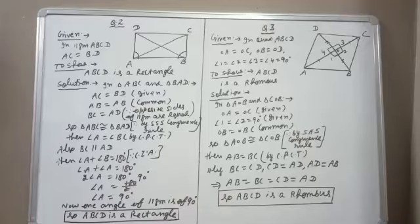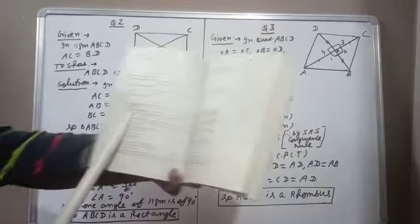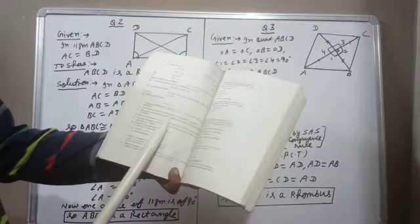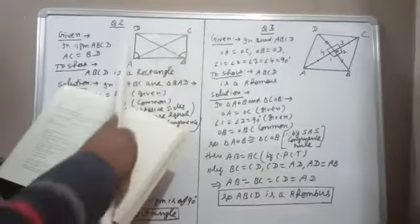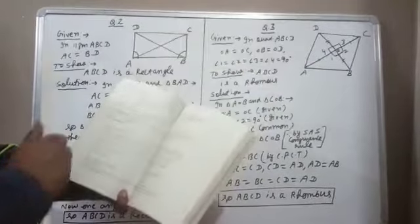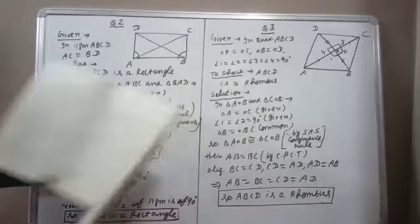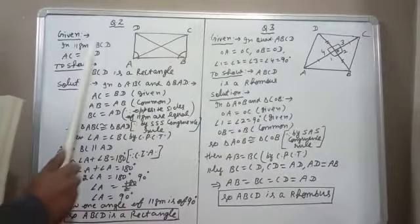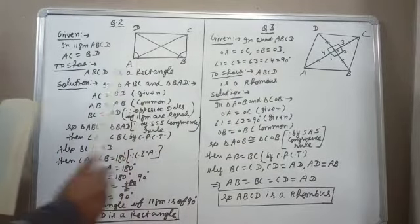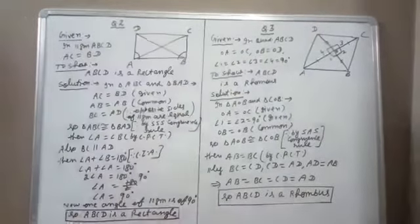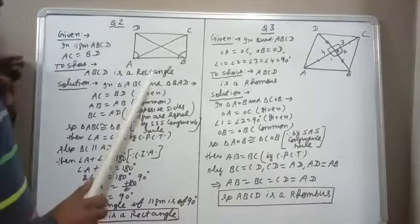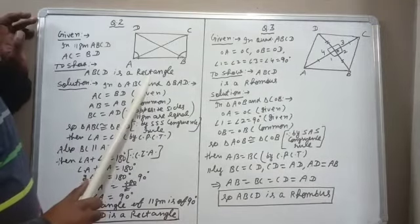Question 2: If the diagonals of a parallelogram are equal, then show that it is a rectangle. We draw the figure of a rectangle. Given: ABCD is a parallelogram where diagonal AC equals diagonal BD. We need to show that ABCD is a rectangle.